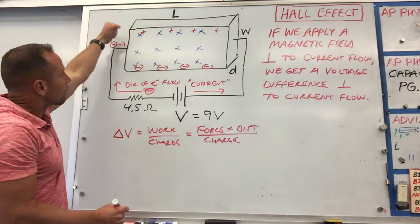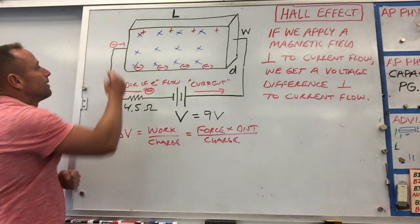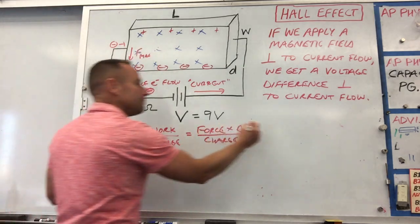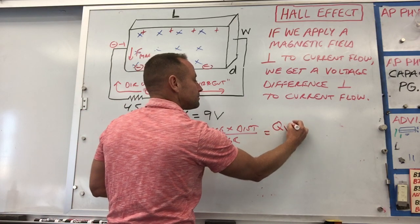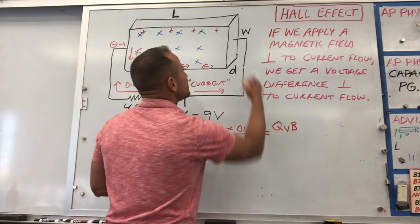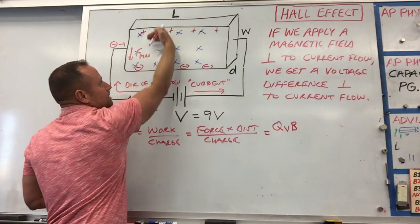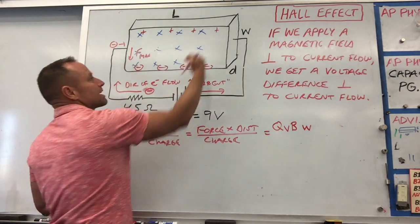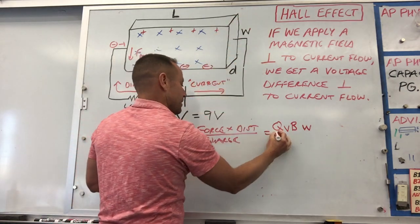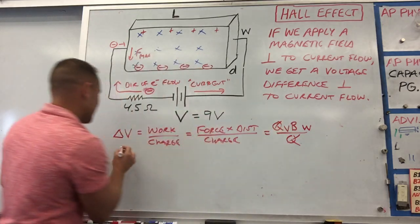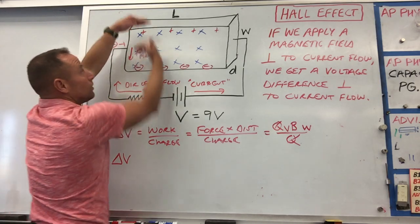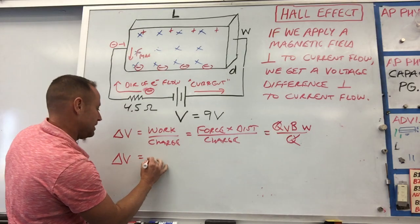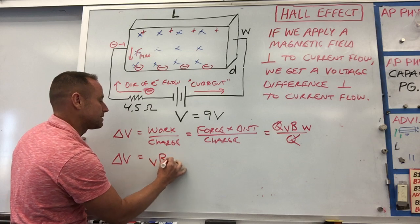The force is the magnetic force pulling the charge down to the bottom of the plate, which is QVB on a moving point charge. The distance is the width of the conductor — you're dragging the charge from one side to the other. So you get QVB times the width, divided by Q. The voltage difference that develops — perpendicular to the original battery voltage — is the velocity of the charge times B times the width: V = vBw.